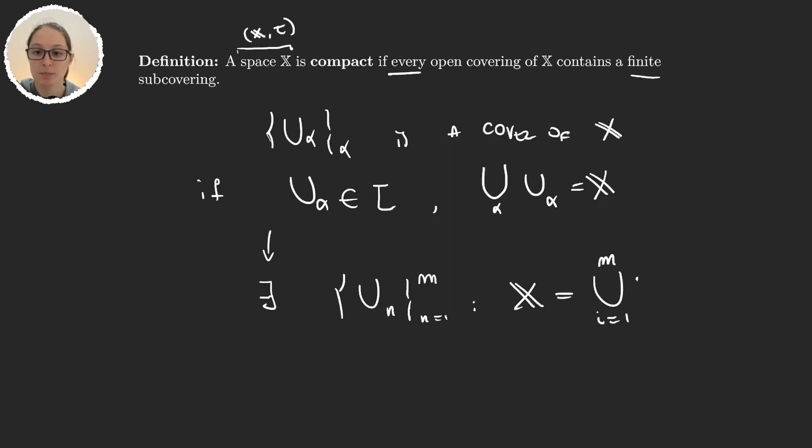What's important about this definition is this word right here: we have to find the finite subcovering for every open covering of X. So it's not just finding one covering of X that has a finite subcovering. It's for every open covering of X there exists a finite subcovering.